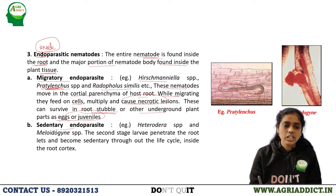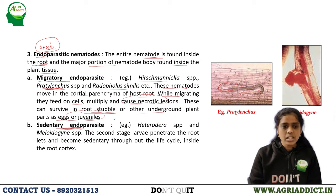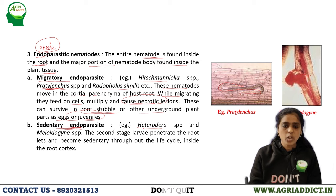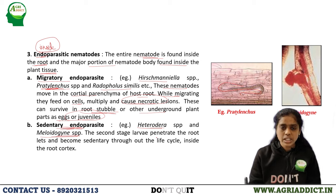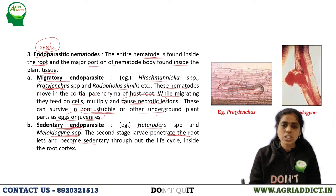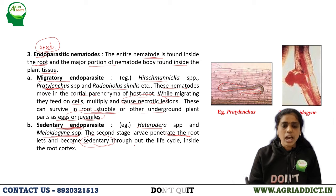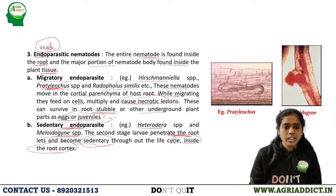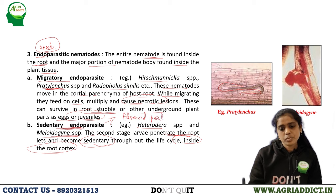Sedentary endoparasites are the most advanced plant parasites. Examples are Heterodera species and Meloidogyne species. Only the second stage larvae, which is the infective stage, penetrates the root system. After entering, it becomes sedentary, staying at one place, and completes its life cycle within the plant tissue inside the root cortex. Hence these types of nematodes are called the most advanced plant parasites.